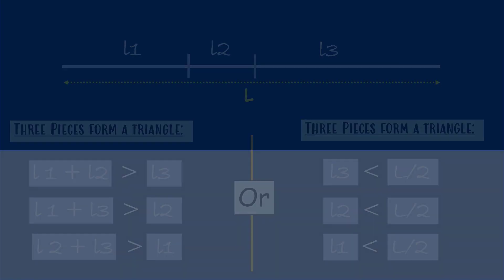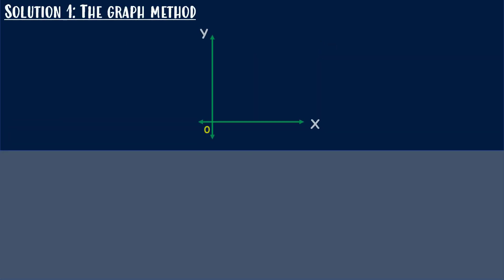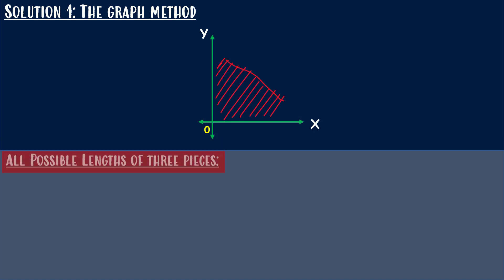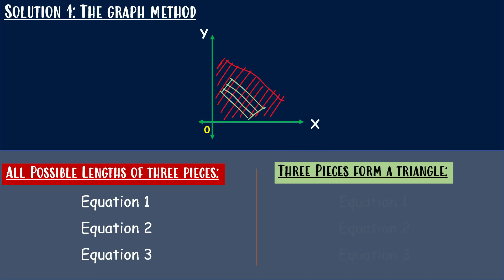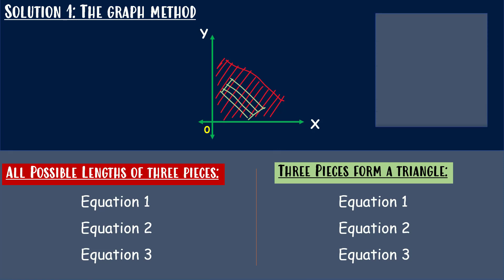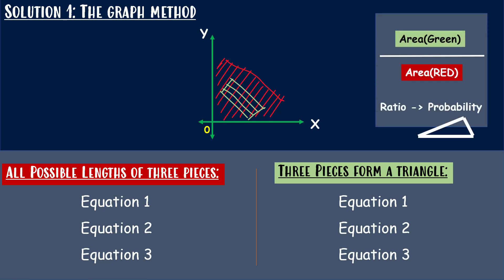Let's see the first approach using the graph method. On the graph, we will first draw the equations of all possible combinations of lengths of the three pieces. Then we will draw the conditions that the three pieces can form a triangle. The ratio of these two areas gives the probability the three pieces can form a triangle.